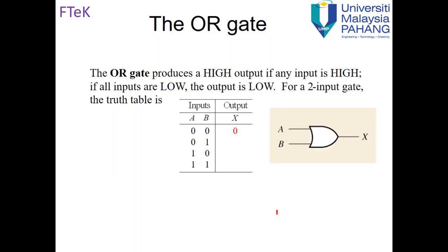The OR gate produces a high output if any input is high. From the truth table: zero OR zero gives zero; zero OR one gives one; one OR zero gives one; and one OR one gives one. In terms of voltage: applying five volts and five volts gives five volts output; applying zero volts and zero volts gives zero volts output.